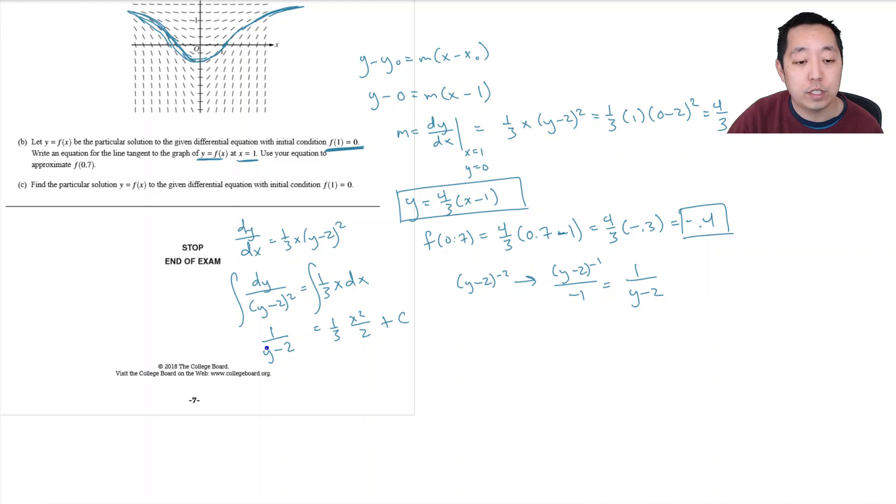So then we need to solve for... Let's first plug in and find the constant. You can do that at this point. If I know that f of one is zero, that means I know y is equal to zero when x is equal to one. So this becomes negative one over negative two, or one over two. One sixth x squared plus c, because one third times one half is one sixth. One squared plus c. And so this is one sixth plus c.